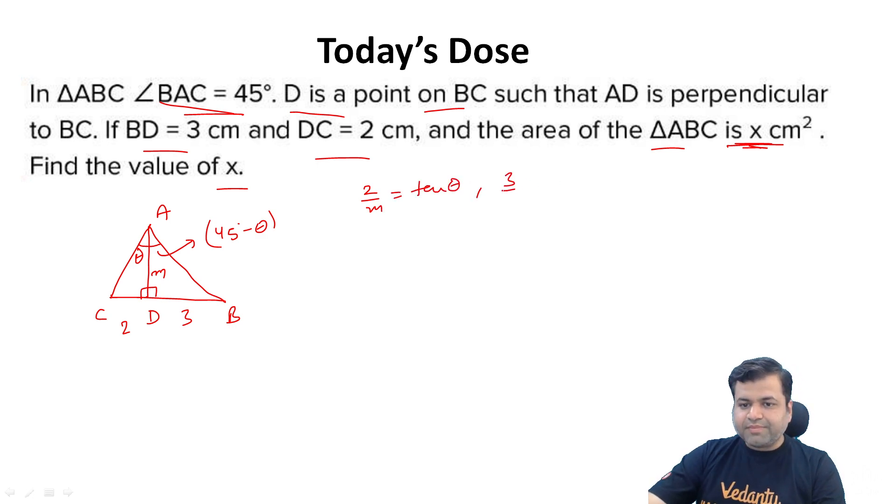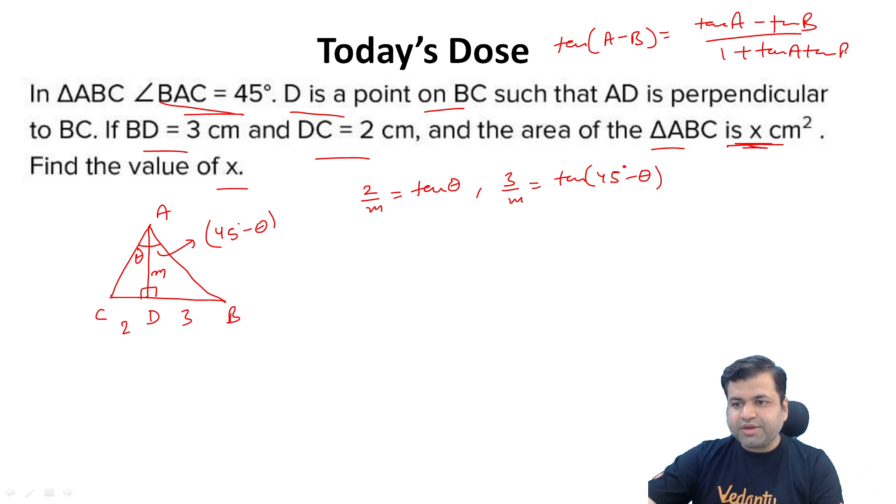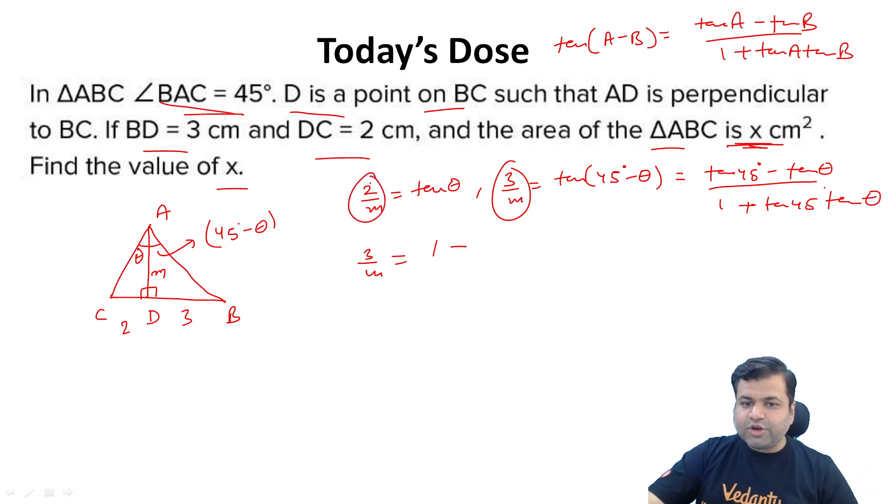Now we use trigonometry here. We use tan of A minus B, that is actually equal to tan of A minus tan of B whole upon 1 plus tangent of A into tangent of B. This is the formula. So tan 45 minus theta I can write tan 45 minus tan theta whole upon 1 plus tan 45 into tan theta. Now I know tan 45 value that is 1.